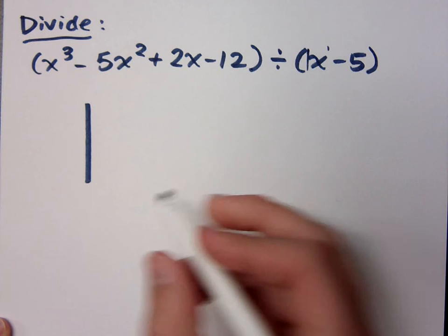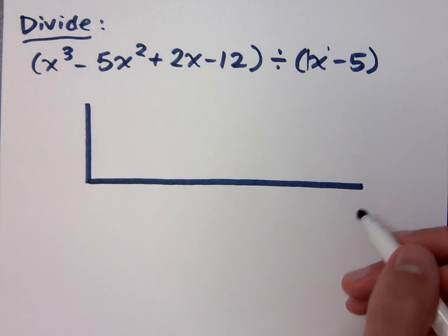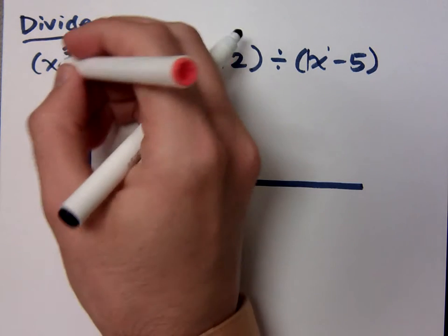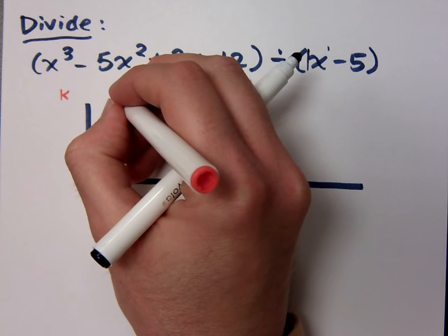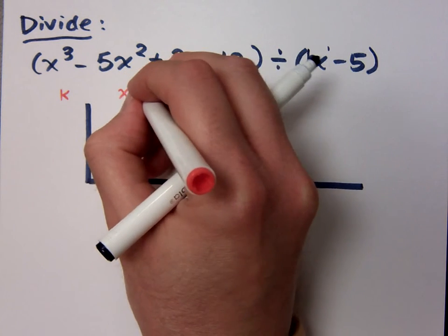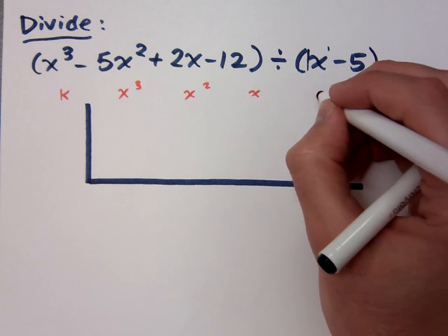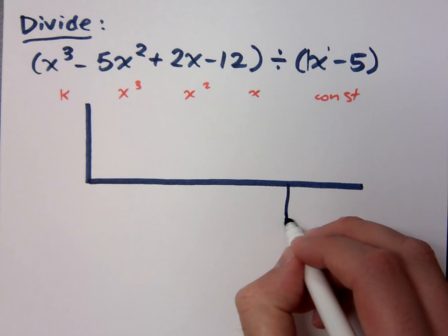This guy's going to be a little bit larger than what I'm used to, right? So just like we've done before, I'm going to label these guys here at the top. So this is for my k. What am I going to start with here on the inside? x to the third, I've got an x squared term, an x term, I've got a constant term.